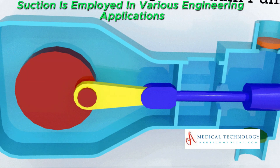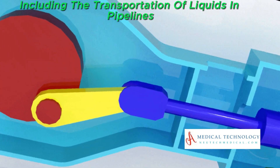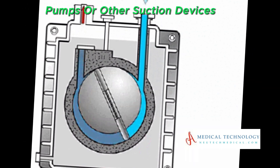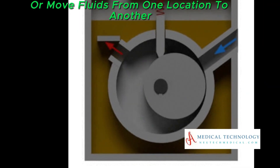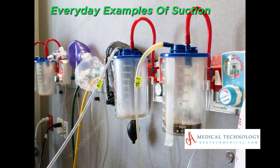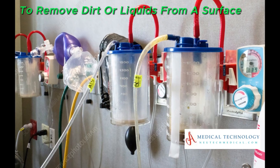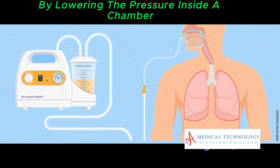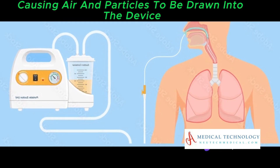Suction is employed in various engineering applications, including the transportation of liquids in pipelines. Pumps or other suction devices are used to overcome elevation changes or move fluids from one location to another. Everyday examples of suction include using a vacuum cleaner to remove dirt or liquids from a surface. The vacuum cleaner creates suction by lowering the pressure inside a chamber, causing air and particles to be drawn into the device.